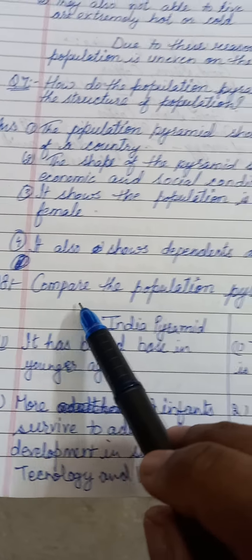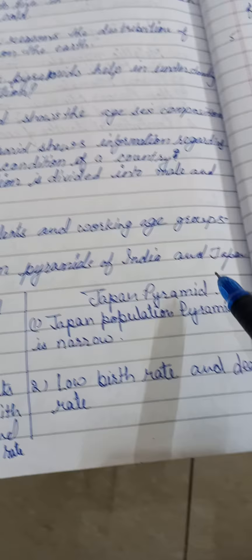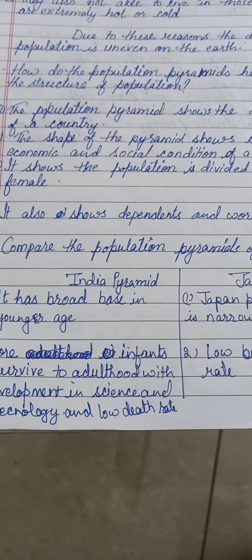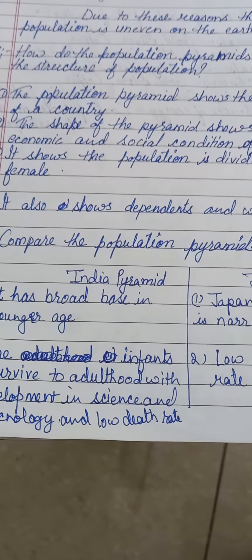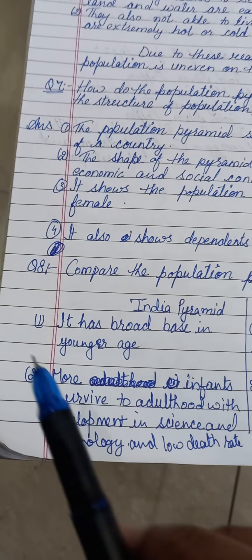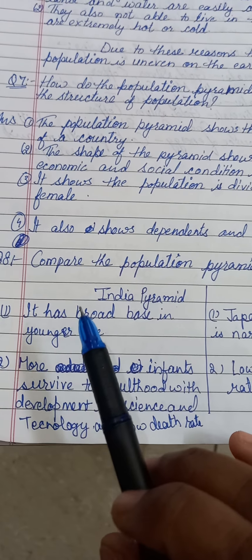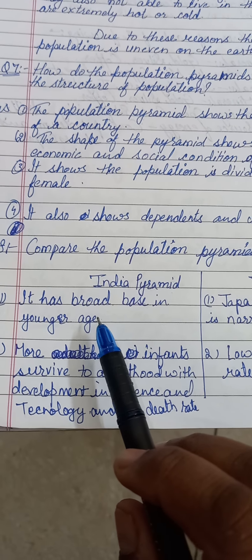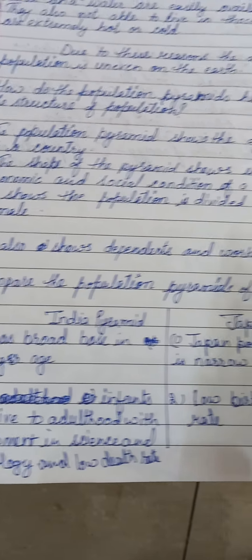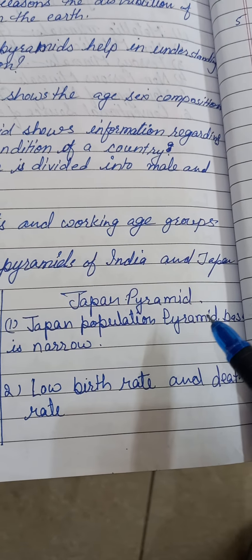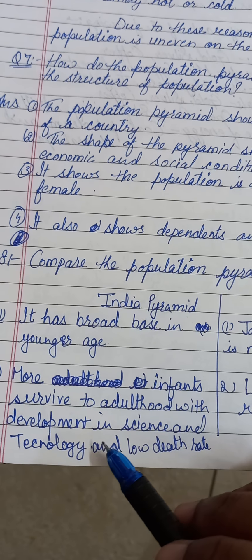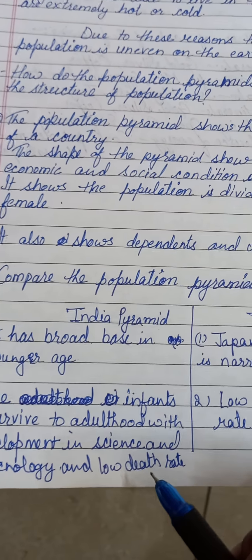Question number 7: How do population pyramids help in understanding the structure of population? Answer: Point 1, the population pyramid shows the age-sex composition of a country. Number 2, the shape of the pyramid shows information regarding the economic and social condition of a country. Number 3, it shows the population divided into male and female. Number 4, it also shows dependent and working age groups.